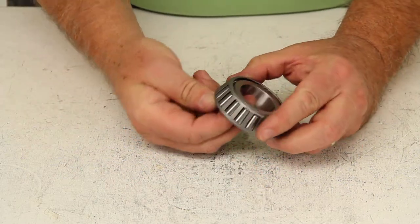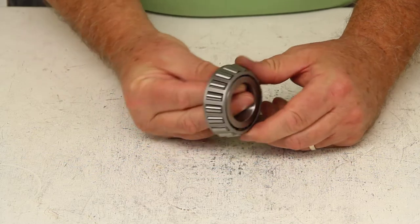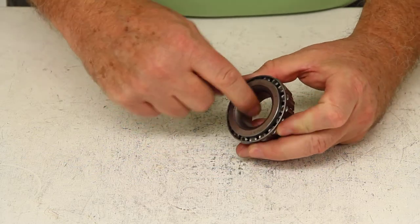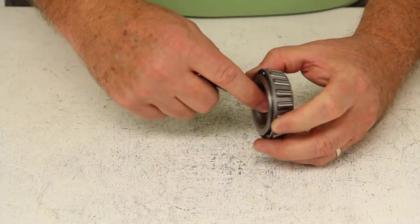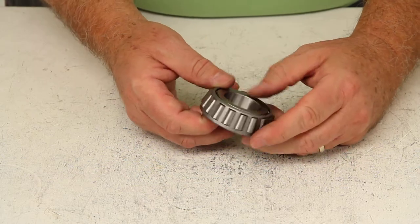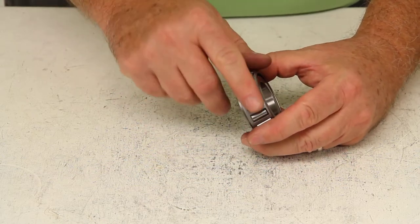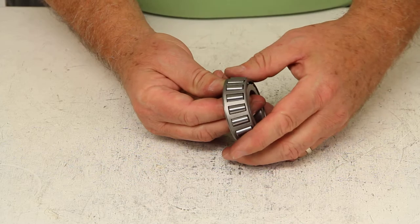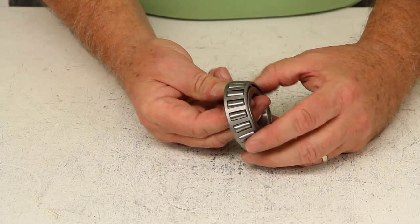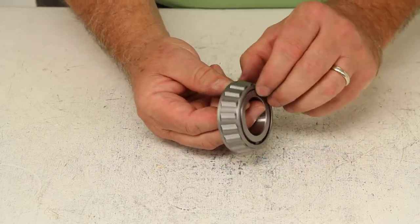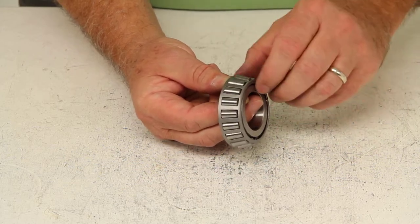Now this bearing does consist of three parts basically. The cone or the inner ring is what slides over the spindle. The roller bearings themselves, which will roll, and then they are held in with a roller retainer or a cage, which holds the bearings in place.